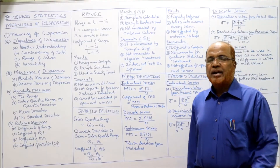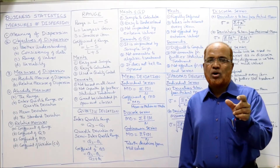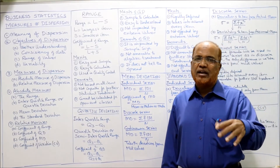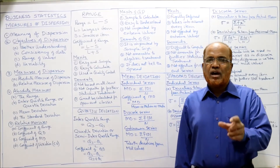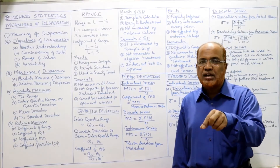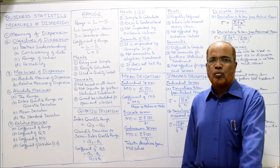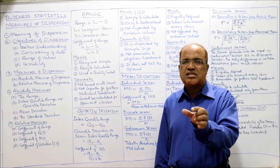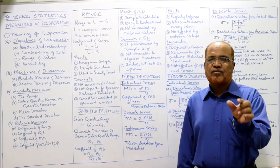Mean deviation shows the arithmetic deviations of values from the average value. The average may be the mean, median, or mode. We find out the average deviation of all items from the central value. Normally, we take deviations from the mean. The formula for individual series is summation of mod D divided by n, where mod D is the deviation of individual items from the mean, ignoring the signs — that is, we ignore whether the deviation is positive or negative.